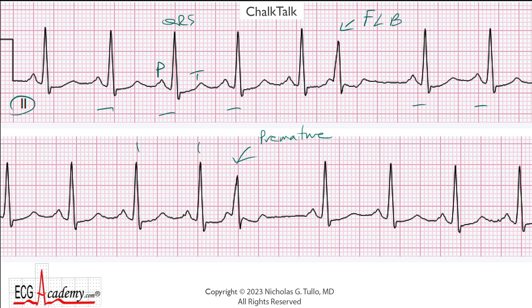You might want to use calipers, but first try to train your eyes to just look at little boxes. Rely a little less heavily on calipers. For example, let's start with this beat right here. Since this QRS lands on a heavy line, it's easy to count off the rate: 300, 150, this would be 100, so it's a little bit less than that — somewhere in the high 90s.